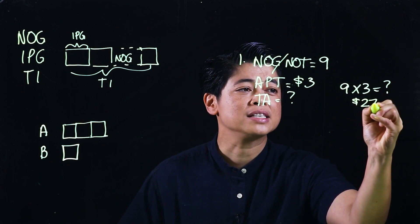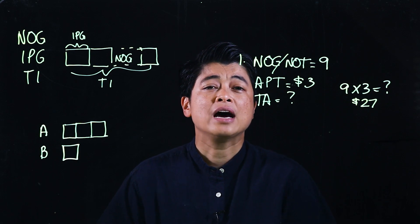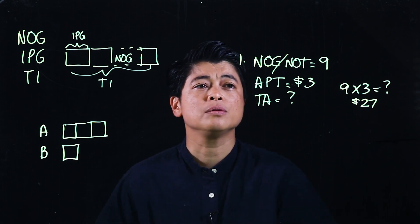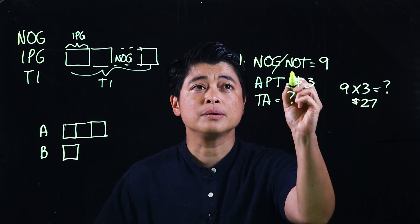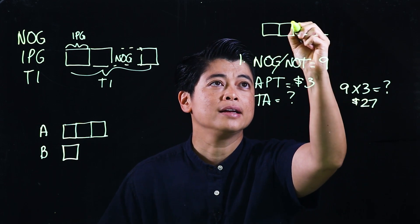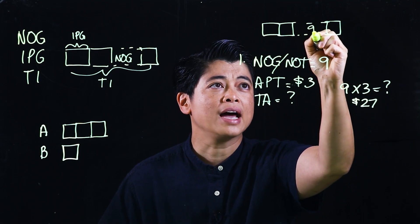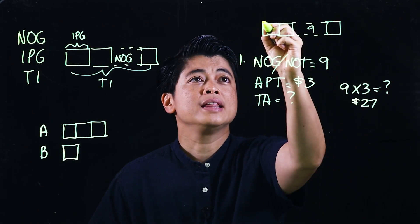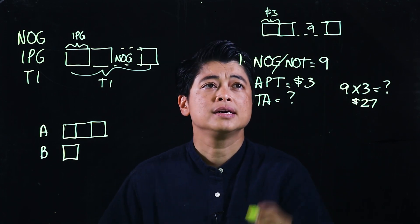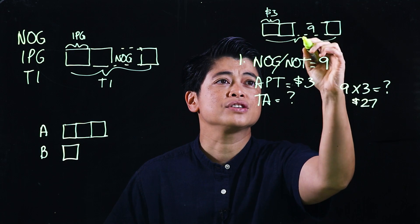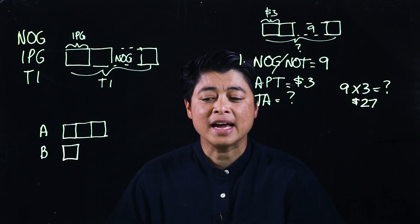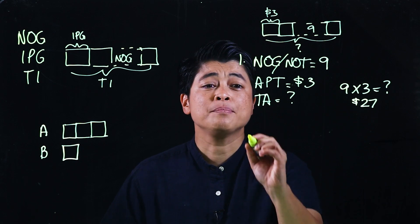The answer is 27 dollars. If a bar model is needed, it will have nine groups — one, two, many — so nine of them, each worth three dollars, and the question is how much is the whole thing.